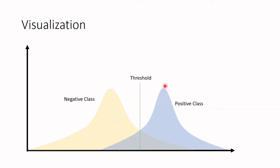Looking only at the positive class, relatively there are many people who have these values of the medical test. When we train a model, we get a threshold. When a new instance arrives and we don't know if it has the disease, that instance takes the medical test. If the value is above the threshold, the model predicts it as a positive sample; if it's below, the model predicts it as a negative sample.